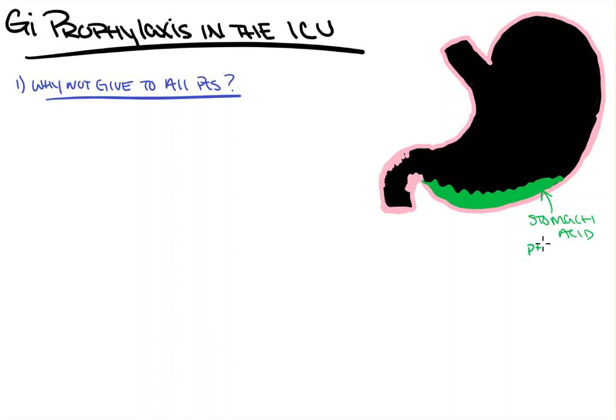Our normal stomach acid pH is about 1.5 to 3.5, and this is for a number of reasons — to break down certain foods, break down proteins, but also to keep certain bacteria, bugs, and invasive particulate matter from taking over our GI system and microflora. This stomach acid pH is very important, and what our drugs are going to do is increase our pH, or decrease the acidity of this stomach acid, through a couple of mechanisms.